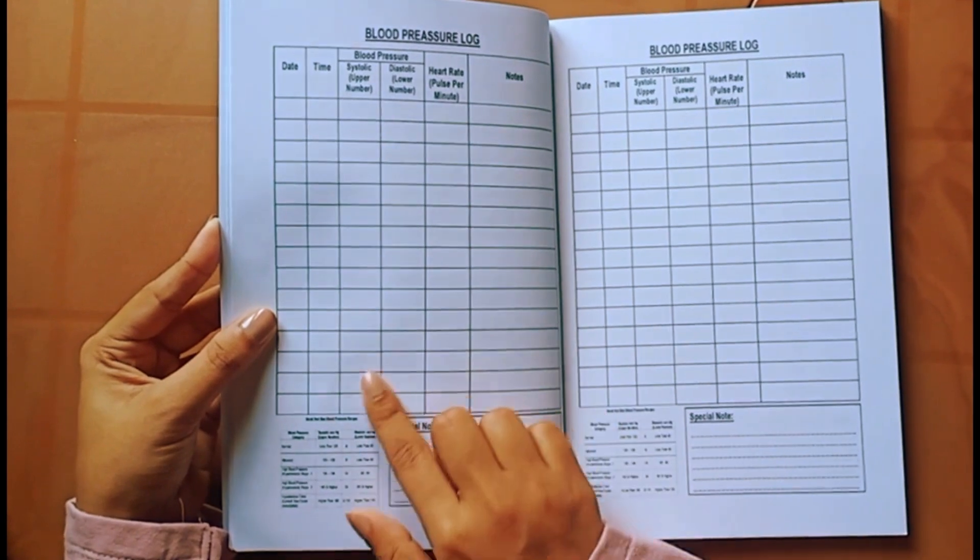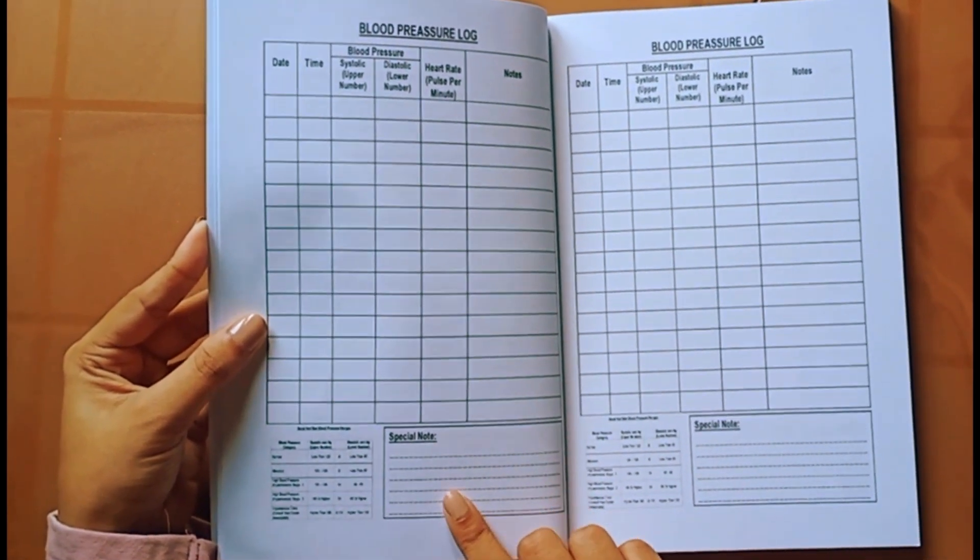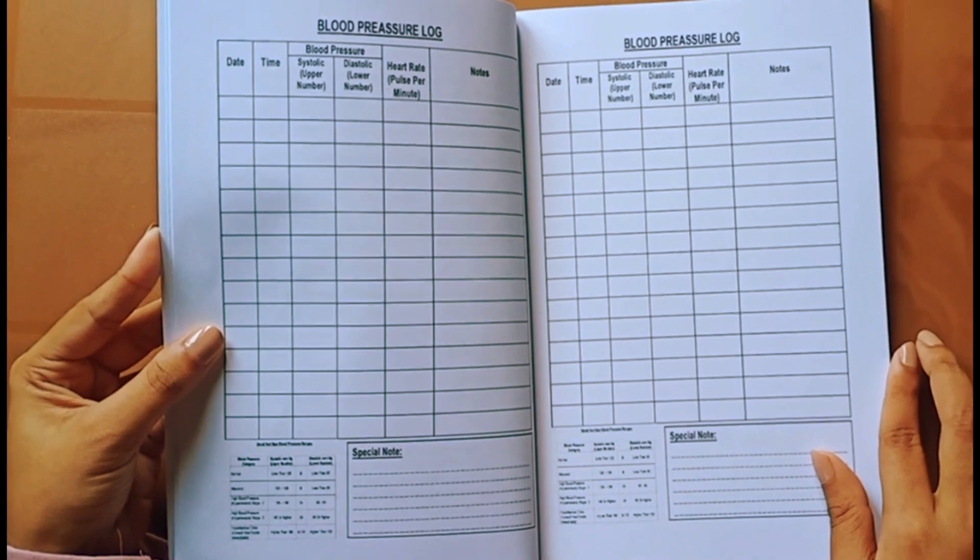Also, each page includes a good and bad blood pressure ranges table for your easy reference, and another special note area exists for every page.